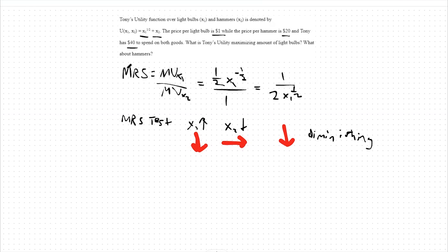From there, if we have diminishing marginal rate of substitution, our next step is to solve like a Cobb-Douglas utility function. We do that by taking our MRS and setting it equal to our price ratio.